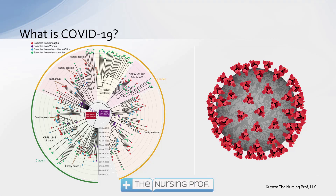So first of all, what is COVID-19? You see this big wheel over here on the left illustrating all of these different types of viruses. You can see that these viruses are all connected in some way, but they're different. When you're talking about having a head cold versus the flu versus having COVID-19, you're talking about different types of virus in the way they attack the body and in the way they are virulent.